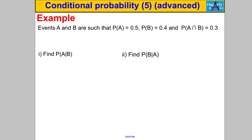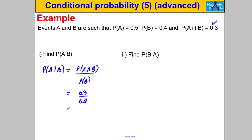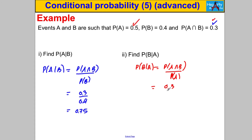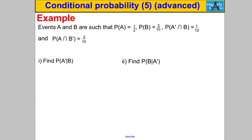Question 2: events A and B have given probabilities — find P(A|B) and P(B|A). P(A|B) = P(A∩B) / P(B) = 0.3 / 0.4 = 3/4 = 0.75. P(B|A) = P(A∩B) / P(A) = 0.3 / 0.5 = 3/5 = 0.6.